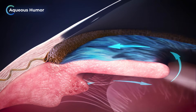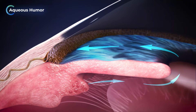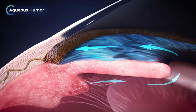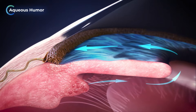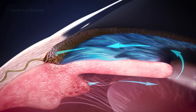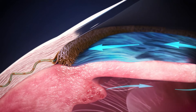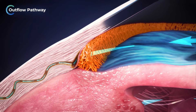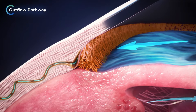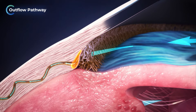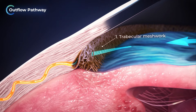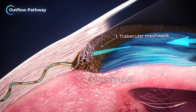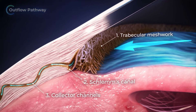Aqueous humor, or fluid, is produced and drained by the eye to ensure the overall health of the eye. The eye naturally drains fluid through the conventional outflow pathway. This pathway consists of the trabecular meshwork, Schlemm's canal, and the collector channels.